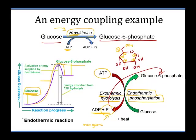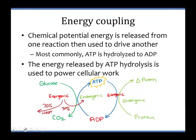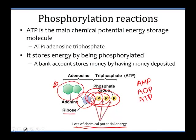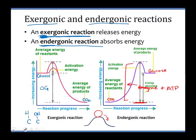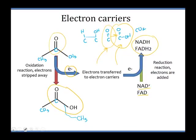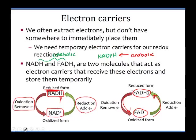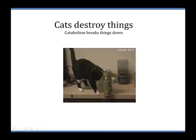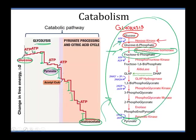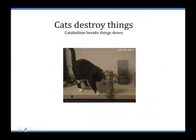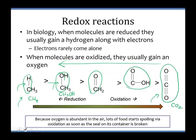This is a specific energy coupling example. This is actually the very first reaction in glycolysis: glucose to glucose 6-phosphate, done by hexokinase.